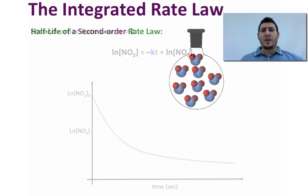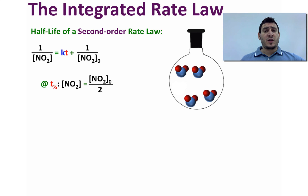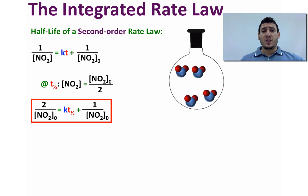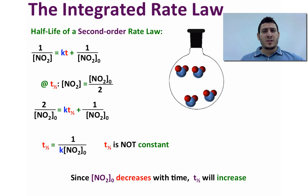Now let's discuss the half-life of the second-order rate law. Setting [NO₂] = [NO₂]₀ / 2 and substituting, we get: 2/[NO₂]₀ = k × t½ + 1/[NO₂]₀. Rearranging, the half-life equals 1 / (k × [NO₂]₀). The half-life is not constant — since the initial concentration of NO₂ decreases with time, the half-life will increase, because the initial concentration is in the denominator.